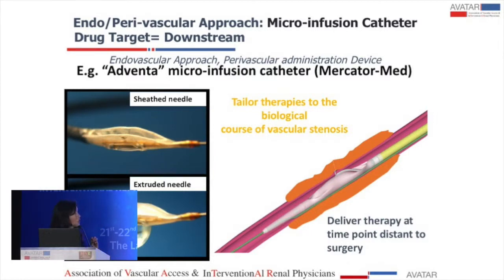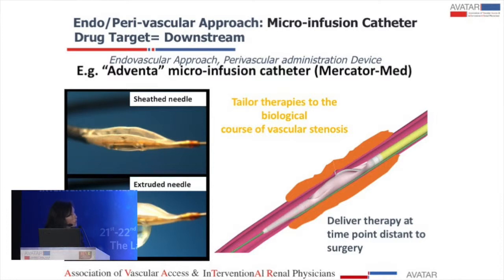Another device uses both an endovascular and perivascular approach — this is the microinfusion catheter, the bullfrog device, which targets downstream pathology. It's a device with a sheath balloon, and inside the sheath balloon there is a needle that comes out. You place it in the area of interest, blow up the balloon, the needle comes out, and the drug exits outside the vessel to work inward. This is the only procedure I know of that does this — otherwise, the only way to access the outside of the blood vessel is during surgery. It's a brilliant technique where you can target the lesion away from surgery and deliver a drug from the outside to work in.